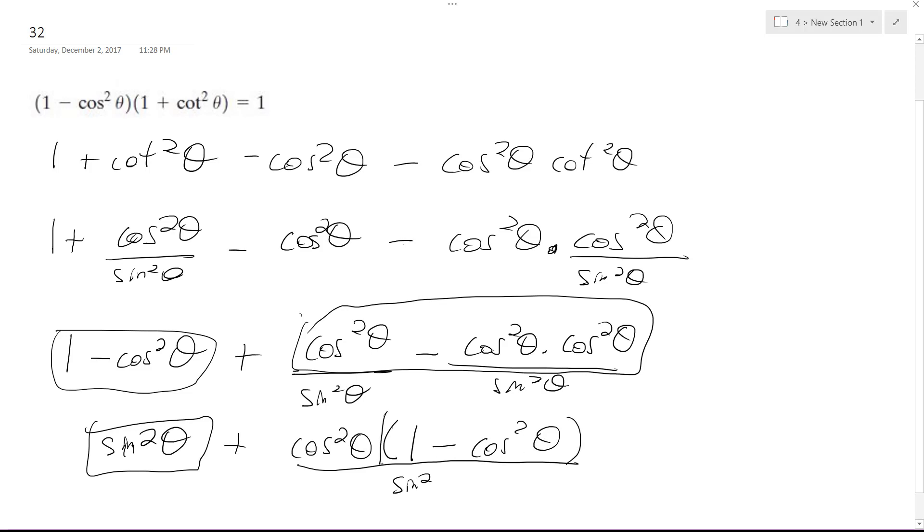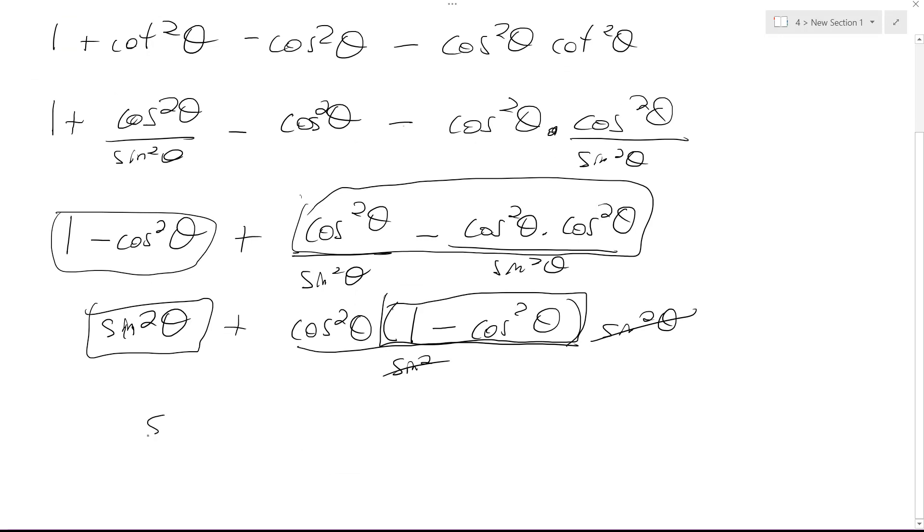So now this can become sine squared theta, and these cancel out. And what I'm left with is sine squared theta from here and then just cosine squared theta. And well, you know, this is a trig identity that equals 1.